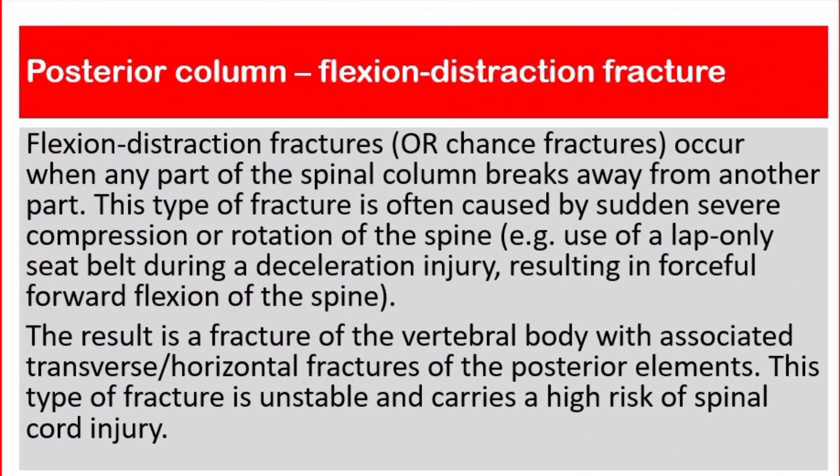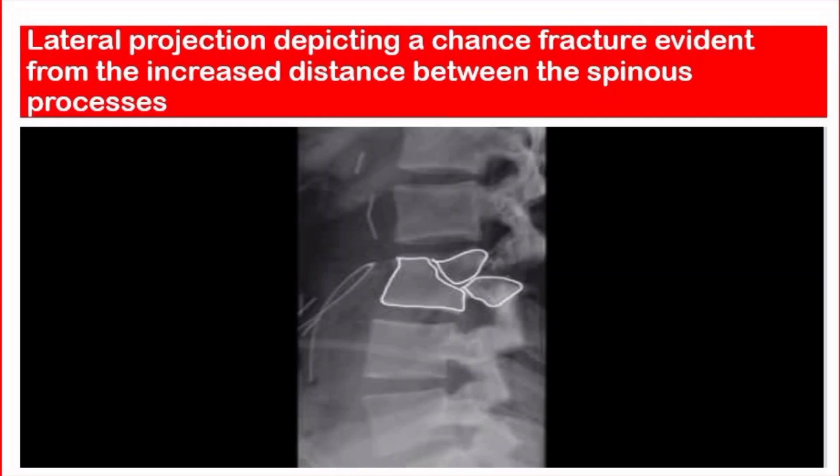Posterior column — Flexion-distraction fracture: Flexion-distraction fractures, or chance fractures, occur when any part of the spinal column breaks away from another part. This type of fracture is often caused by sudden severe compression or rotation of the spine — for example, use of a lap-only seat belt during a deceleration injury, resulting in forcible forward flexion of the spine. The result is a fracture of the vertebral body with associated transverse or horizontal fractures of the posterior elements. This type of fracture is unstable and carries a high risk of spinal cord injury. This lateral projection depicts a chance fracture, evident from the increased distance between the spinous processes.